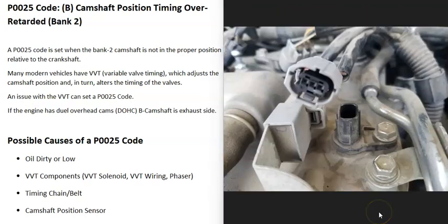The last possible cause is some kind of issue with the camshaft position sensor on the bank 2 side of the engine, sensor B. If that sensor goes bad, it might just be reporting bad information back to the computer, so the computer thinks there's a problem when there isn't. Usually if that happens, you're going to be getting other codes too, so pay attention to any additional codes — a bad camshaft position sensor is the last thing on the list.